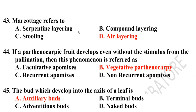Forty-second question: Fasciazione marcottage refers to air layering. Forty-third question: If a parthenocarpic fruit develops even without a stimulus from pollination, then this phenomenon is referred to as parthenocarpy. Forty-fourth question: The bud which develops in the axil of the leaf is axillary bud, terminal bud, adventitious bud, or knotted bud?